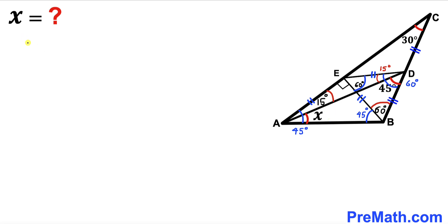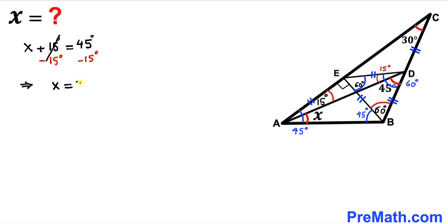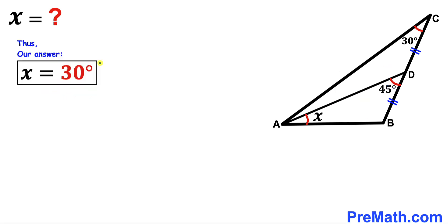So we can write: X plus 15 degrees equals 45 degrees. Subtracting 15 degrees from both sides, angle X turns out to be 30 degrees. After all the calculations and manipulations, angle X equals 30 degrees — and that is our final answer.